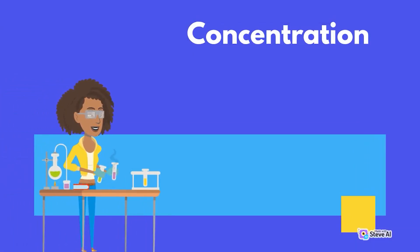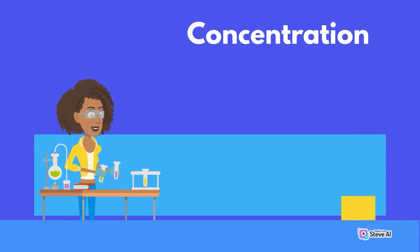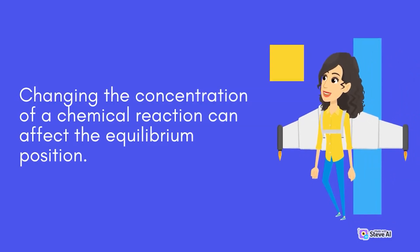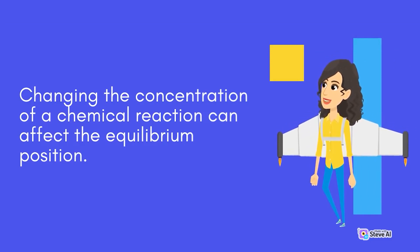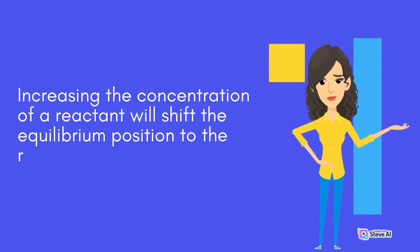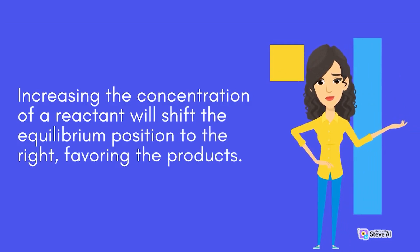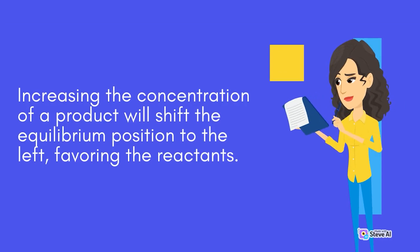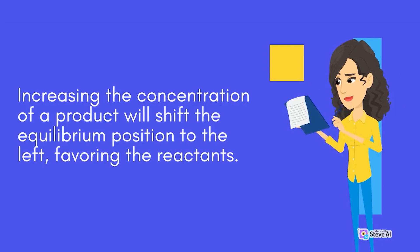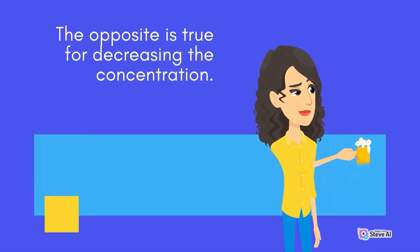Concentration. Changing the concentration of a chemical reaction can affect the equilibrium position. Increasing the concentration of a reactant will shift the equilibrium position to the right, favoring the products. Increasing the concentration of a product will shift the equilibrium position to the left, favoring the reactants. The opposite is true for decreasing the concentration.